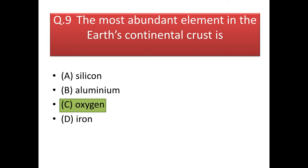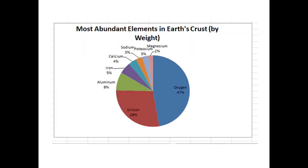Next question: the most abundant element in the Earth's continental crust is? From the figure you can see the most abundant elements on the Earth's crust by weight percentage: clearly oxygen wins, next comes silicon, then aluminum, then iron, then calcium, etc.